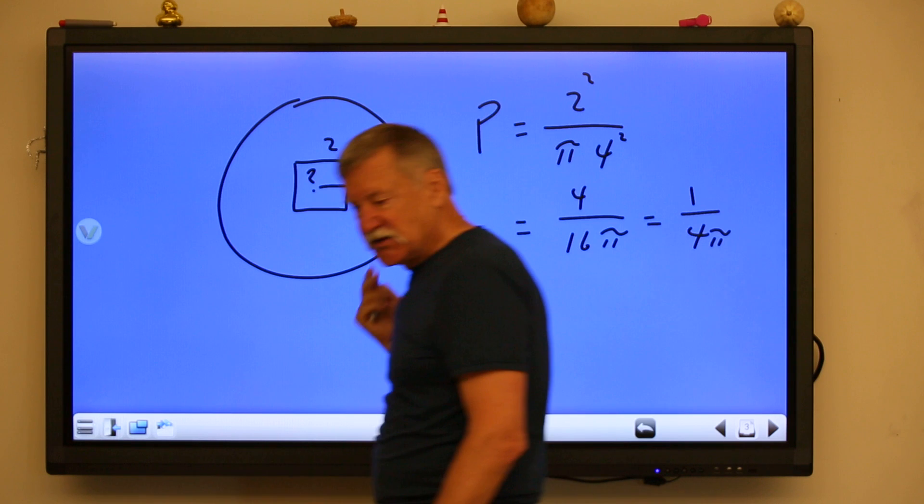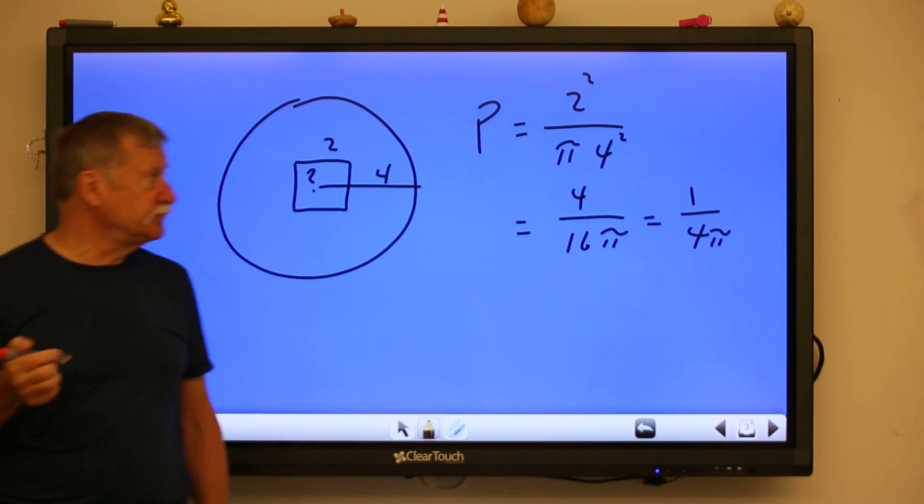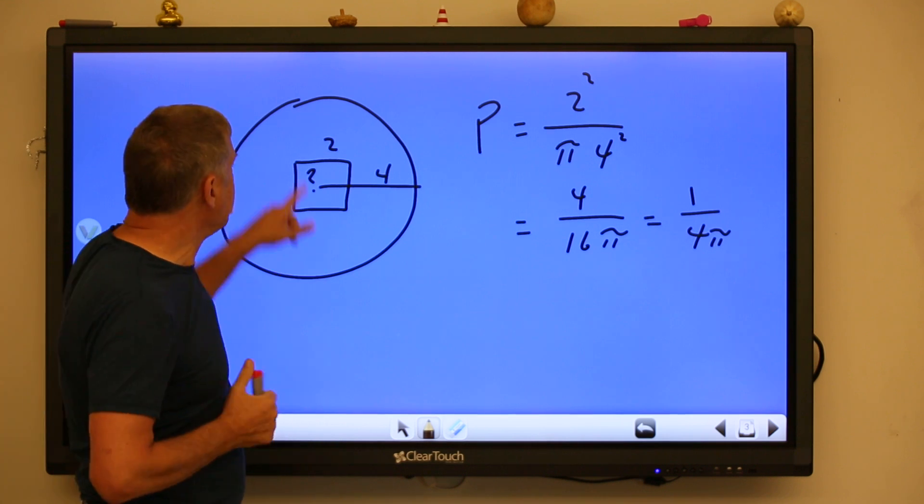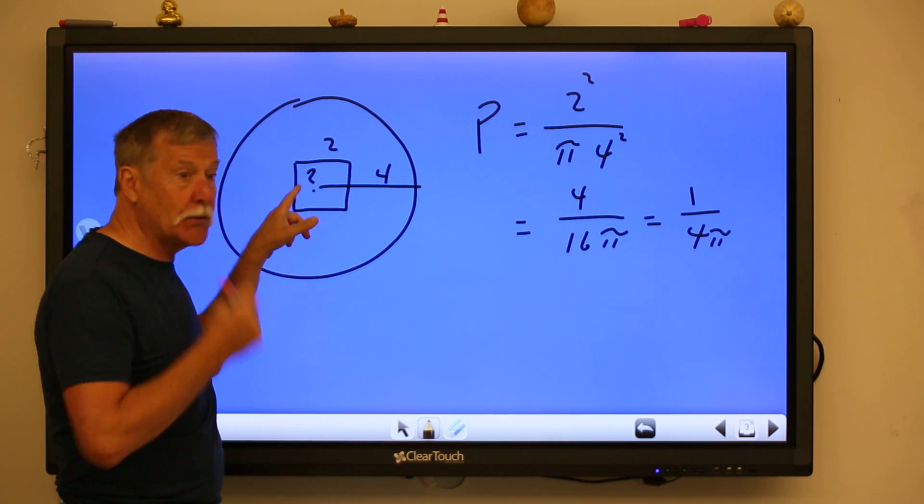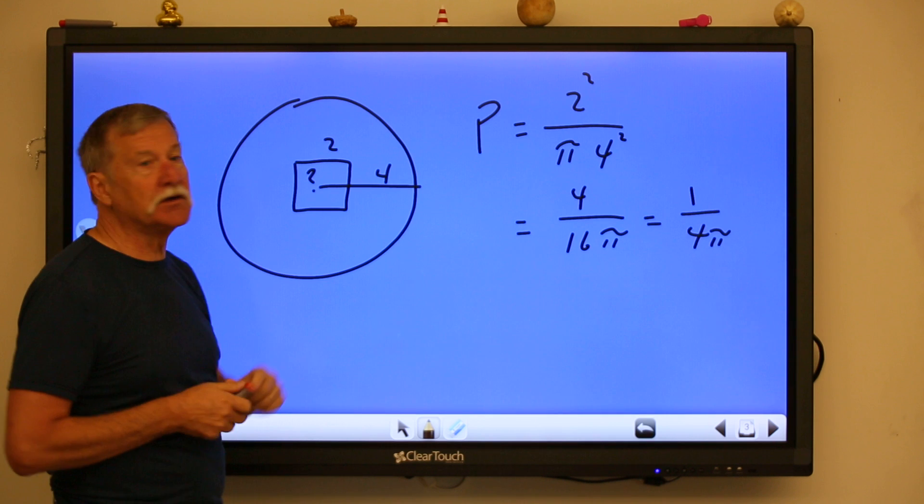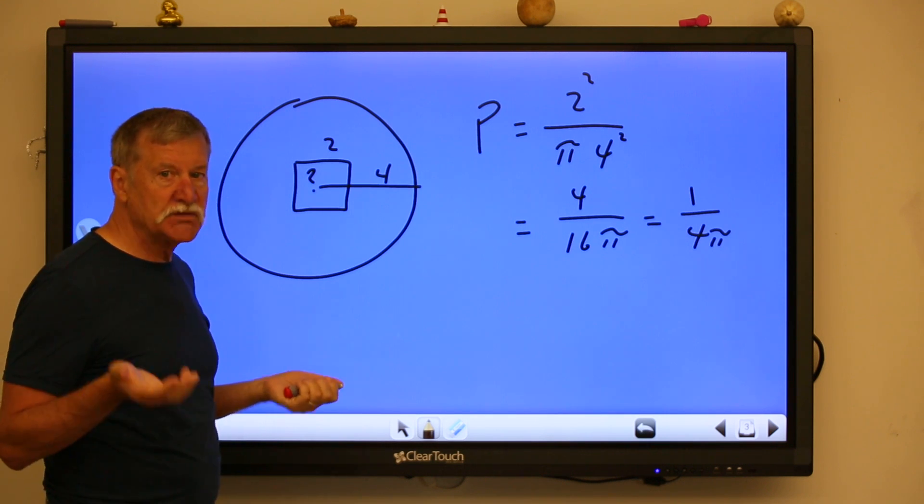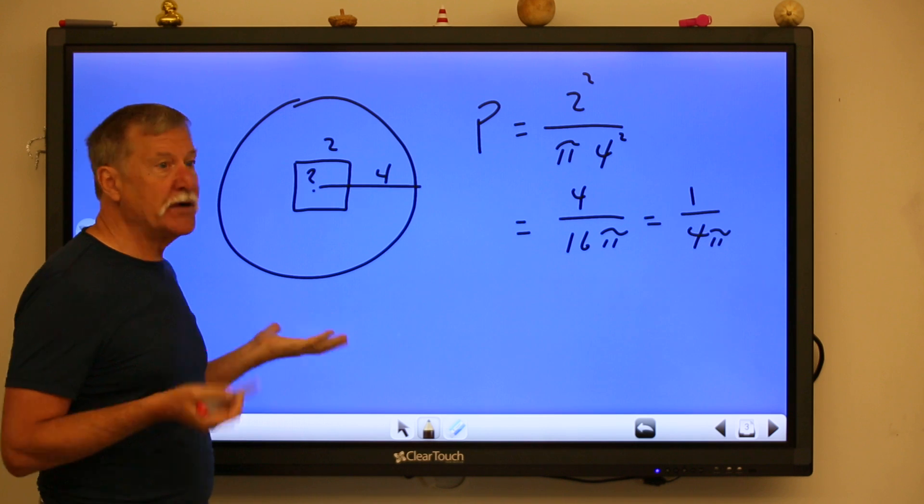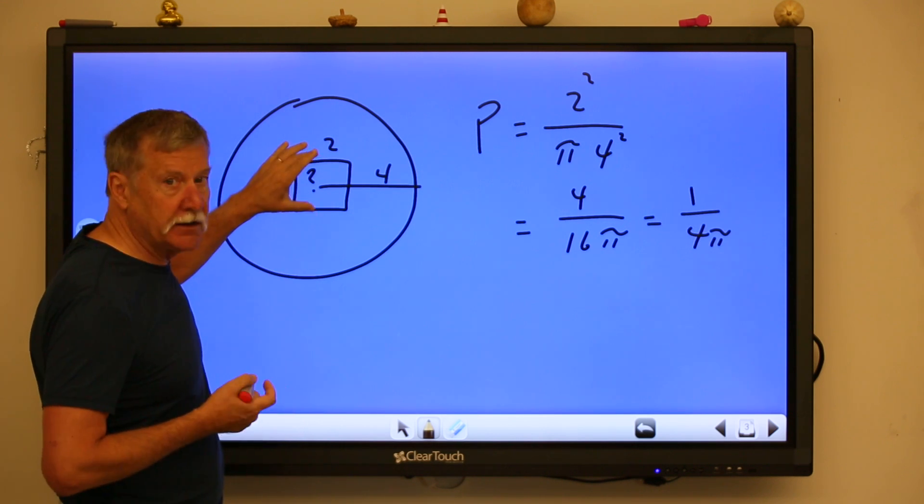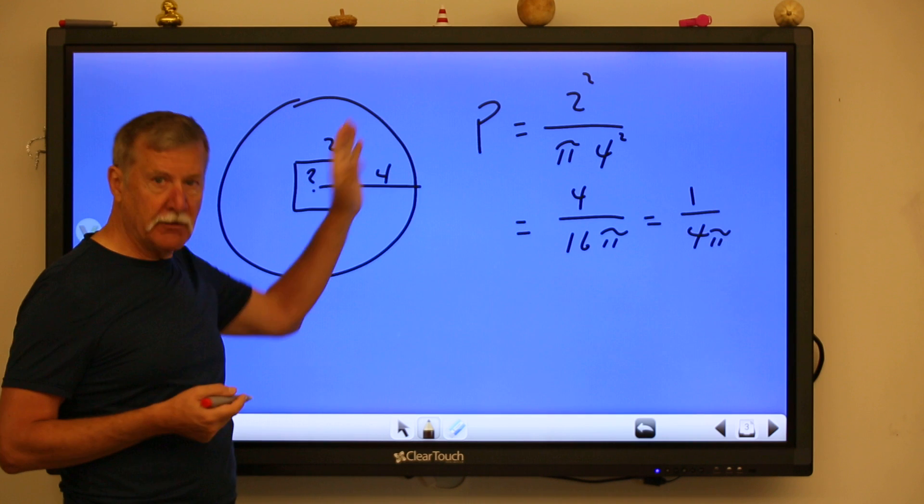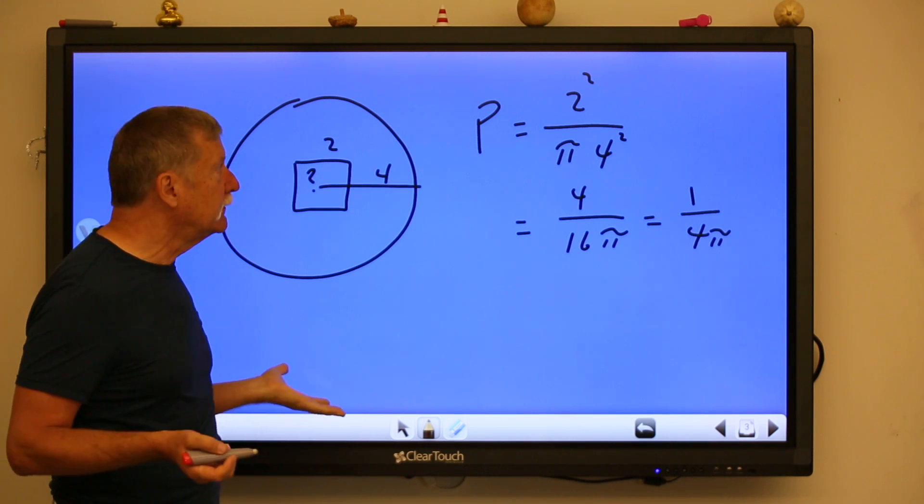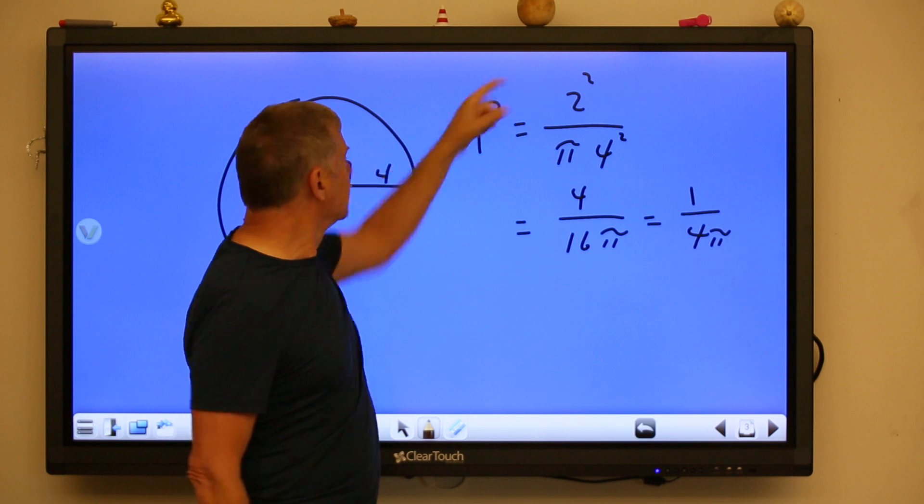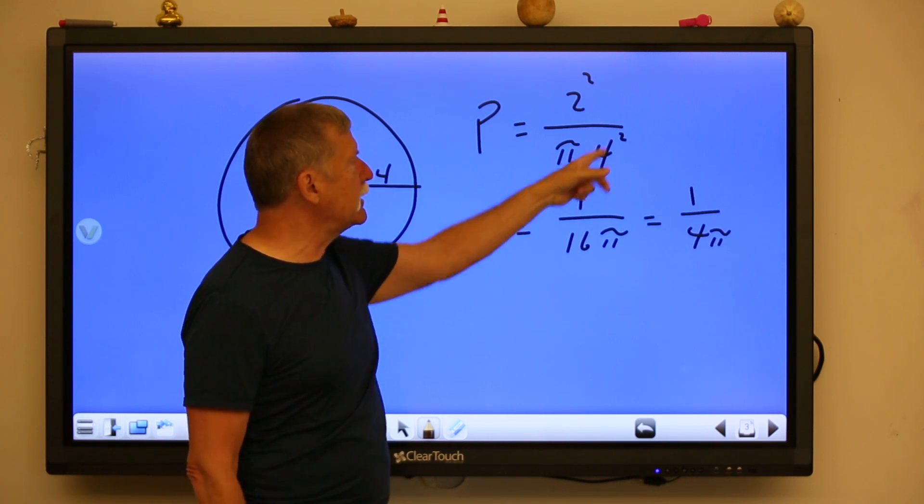We can put a square inside a circle. Same scenario, we're assuming that you're not going to miss the target completely. And now I've got a 2 by 2 square inside a circle with a radius of 4. So what's the chance of hitting the square? Well, that would be the ratio of the area of the square compared to the area of the circle. The area of the square is side squared, 2 squared. The area of the circle is pi r squared.